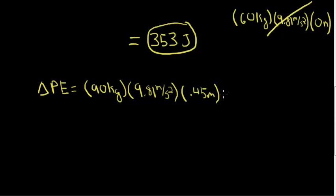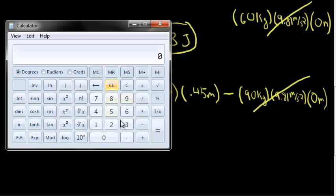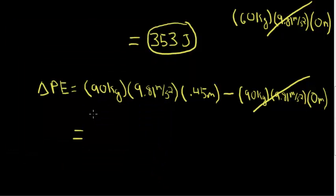Subtracted by the initial potential energy, which is 90 kilograms times 9.81 meters per second squared times 0 meters, because we are at ground level. Now as before, we can cross out the initial potential energy, and therefore the change in potential energy for the 90 kilogram student equals 397 joules.